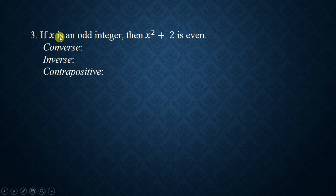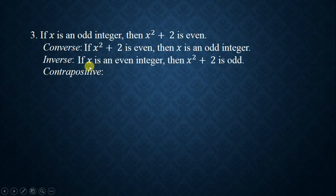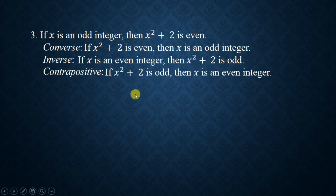Number three: if X is an odd integer, then X² + 2 is even. The converse is: if X² + 2 is even, then X is an odd integer. The inverse (not-P implies not-Q) is: if X is an even integer, then X² + 2 is odd. The contrapositive is: if X² + 2 is odd, then X is an even integer.